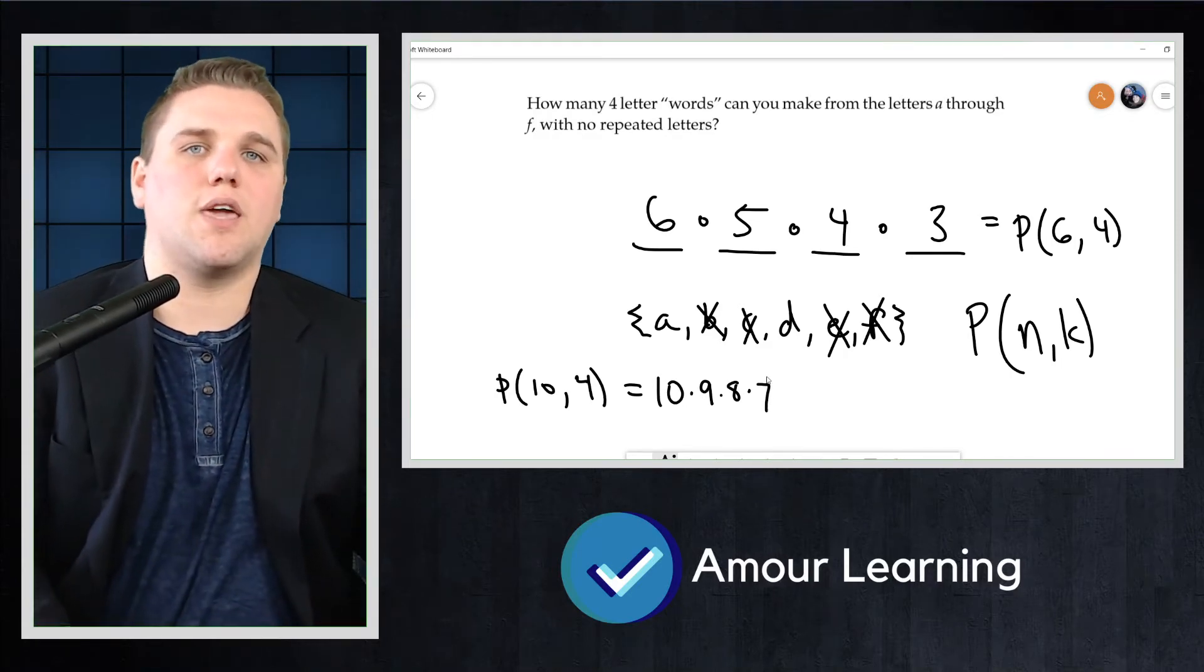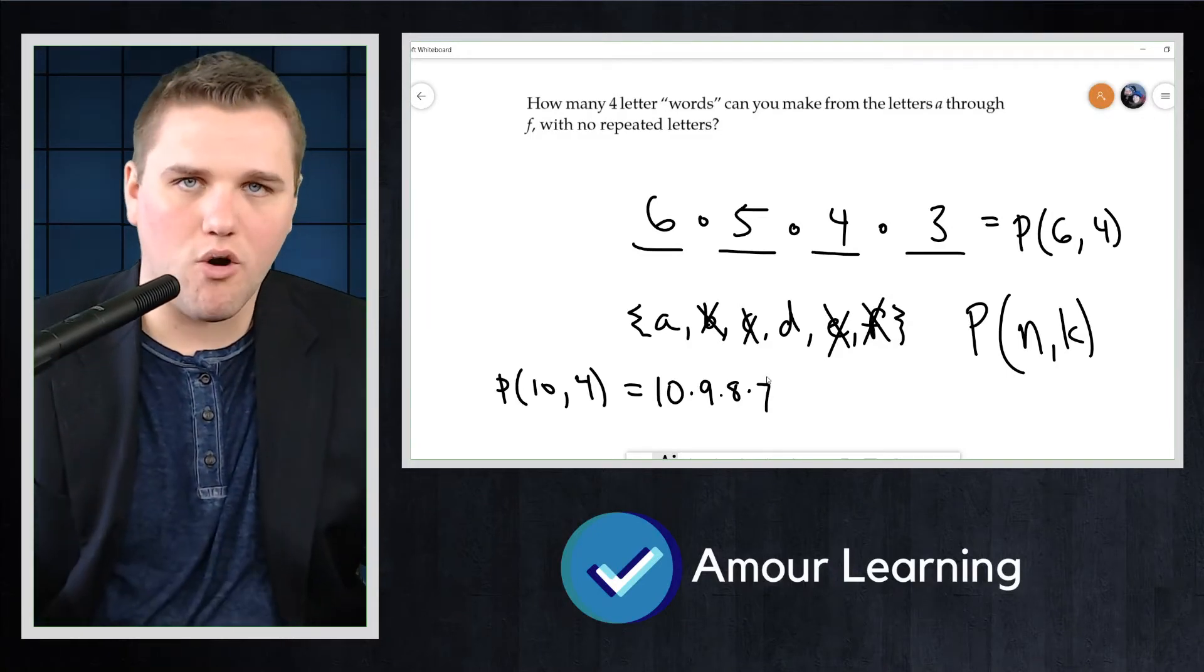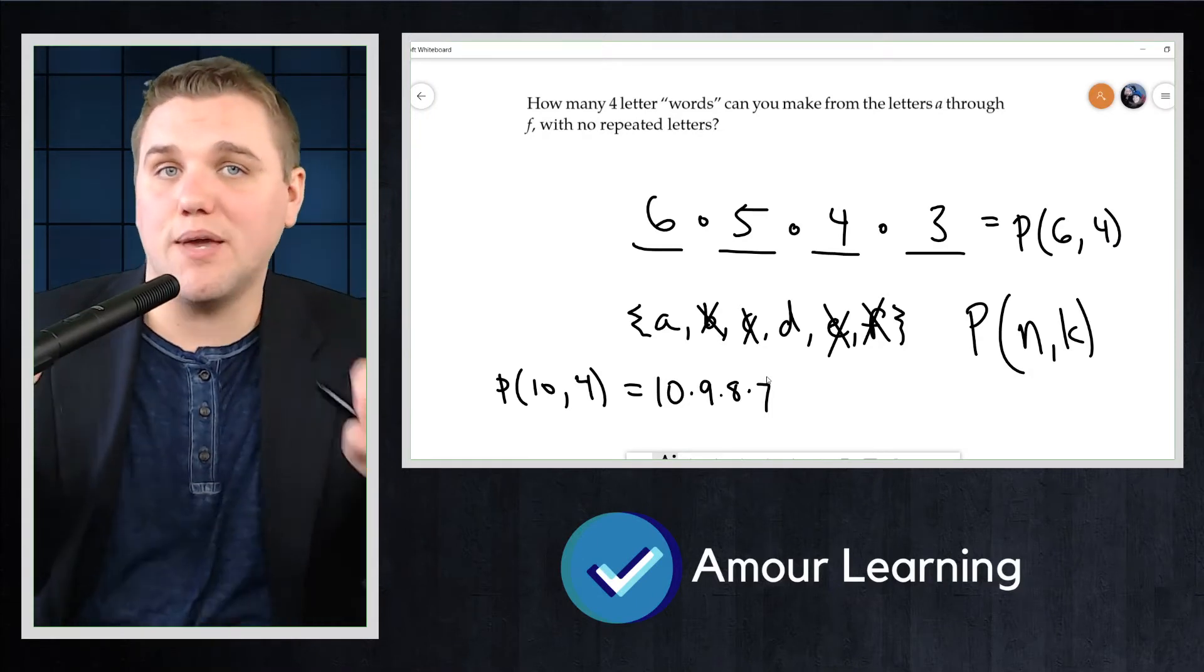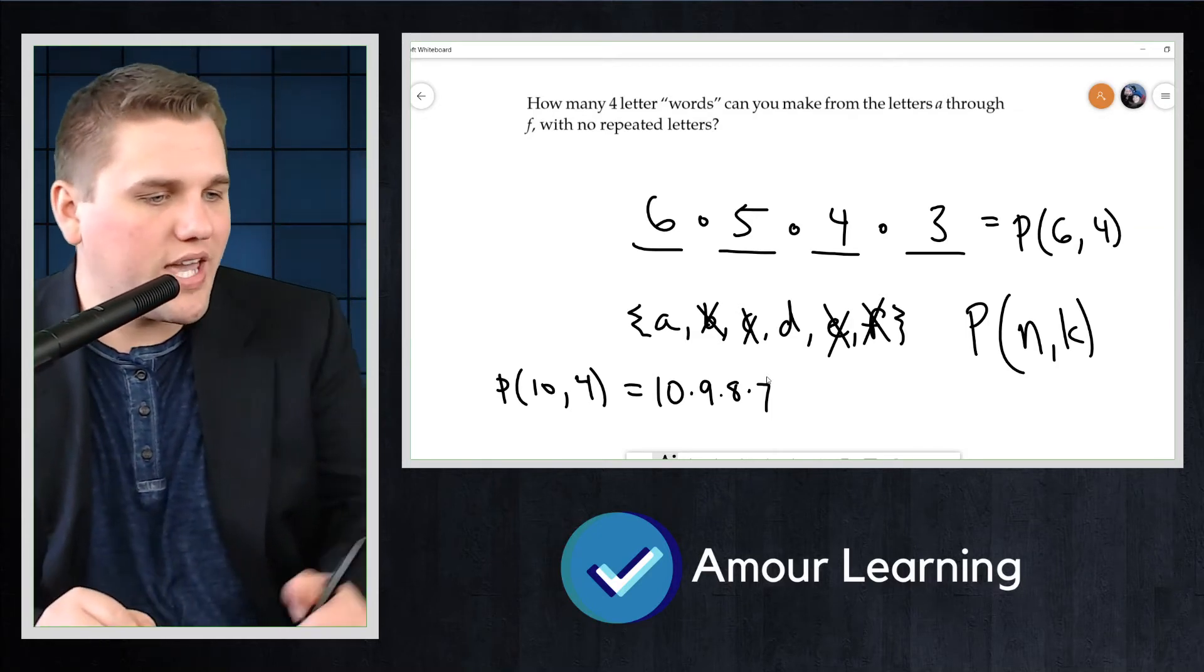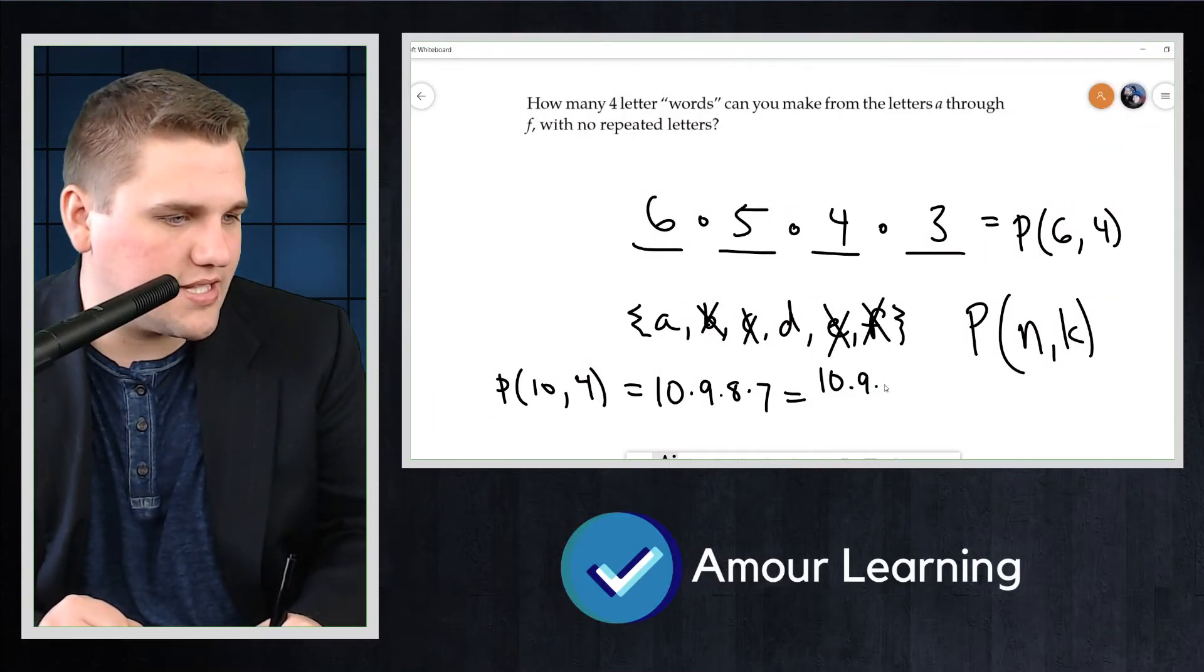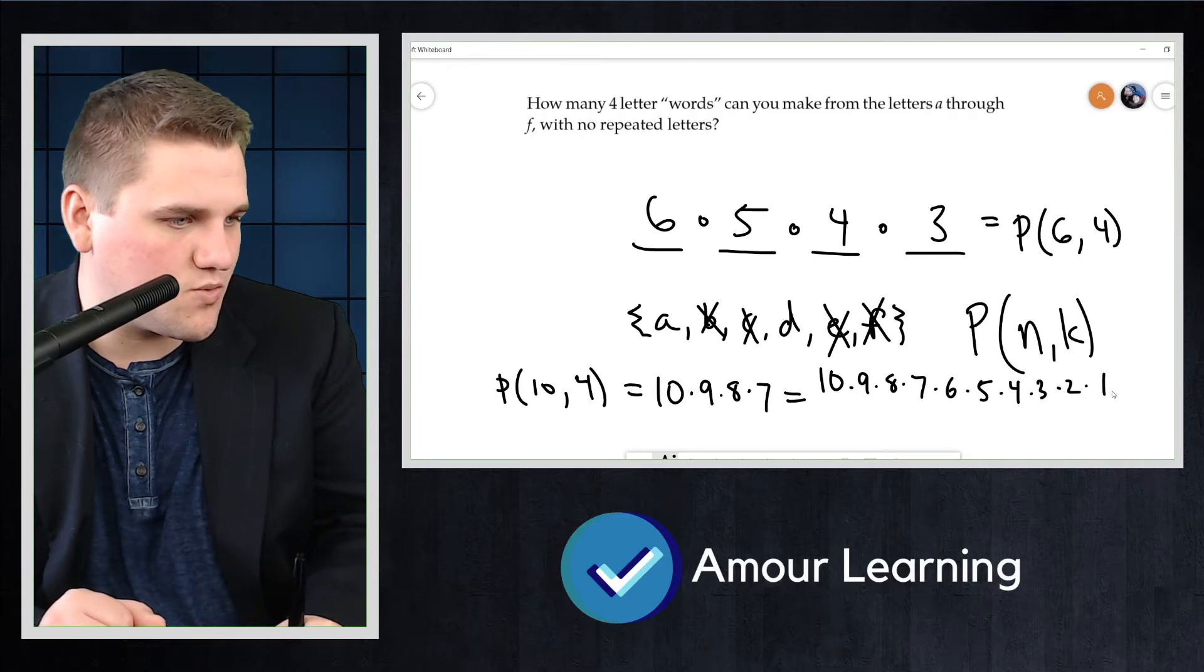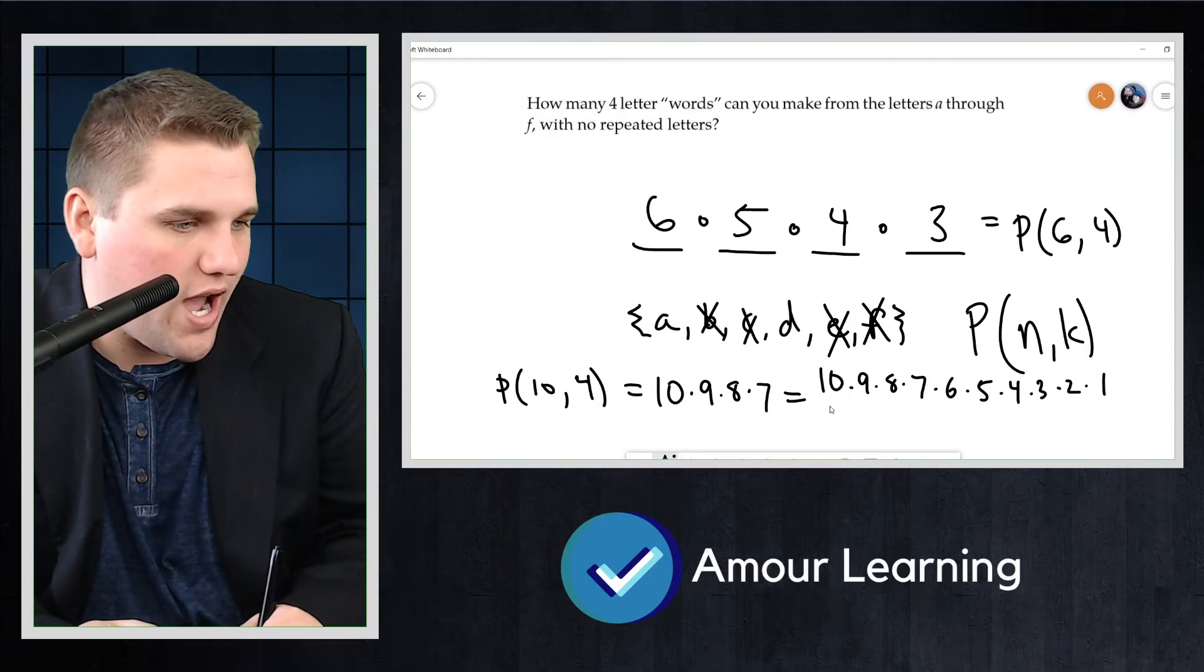There are four objects here that we're picking from 10. Notice again that P(10,4) starts out looking like 10 factorial, but we stop after seven. We can formally account for this stopping by dividing away the part of the factorial that we don't want. So we can actually say that this is the same thing as 10 times 9 times 8 times 7 times 6 times 5 times 4 times 3 times 2 times 1.